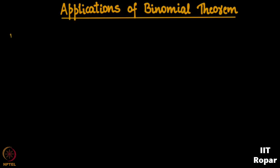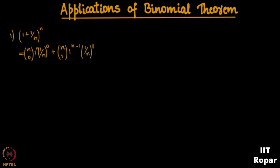You all must have heard of (1 + 1/n)^n. When I apply the binomial theorem on this, the expansion becomes: n choose 0 · 1^n · (1/n)^0, plus n choose 1 · 1^(n−1) · (1/n)^1, plus n choose 2 · 1^(n−2) · (1/n)^2, plus n choose 3 · 1^(n−3) · (1/n)^3, and so on.